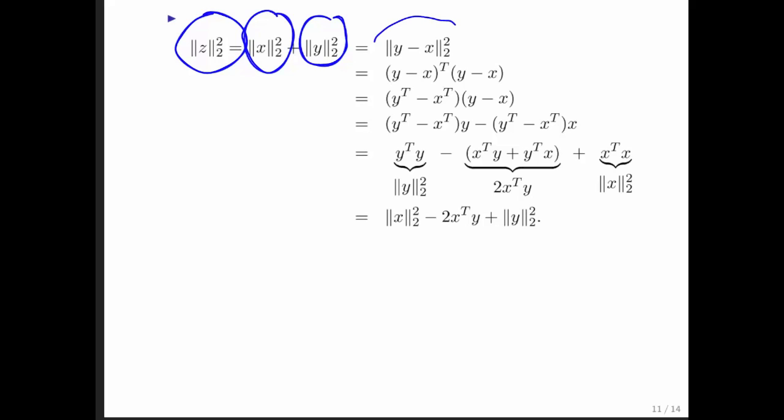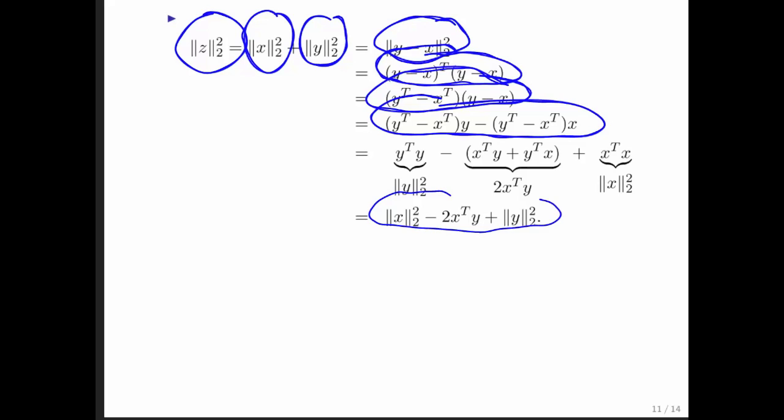But the length of z squared is just the length of the vector y minus x squared, which we can define with the dot product of y minus x with itself. If we then push through the various things we've learned about vector operations, we end up with this expression right here.